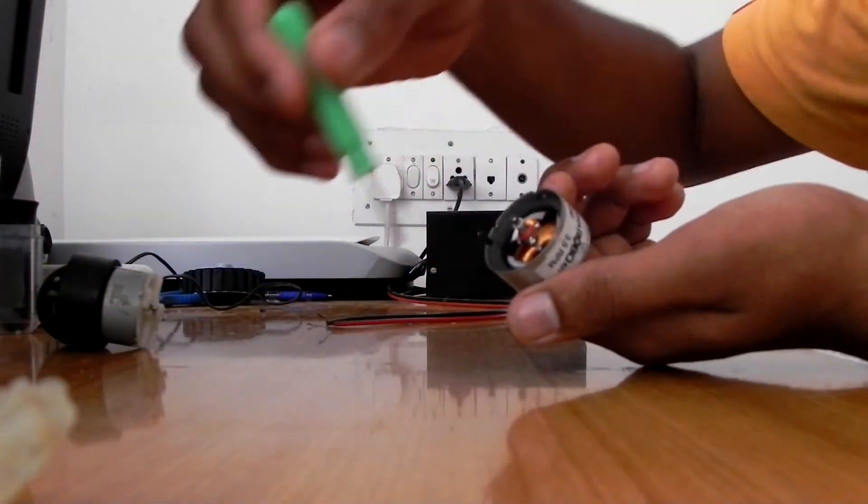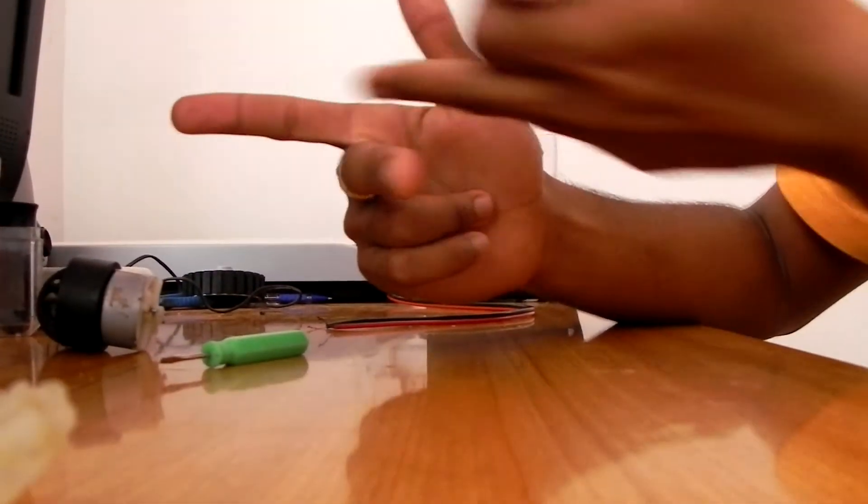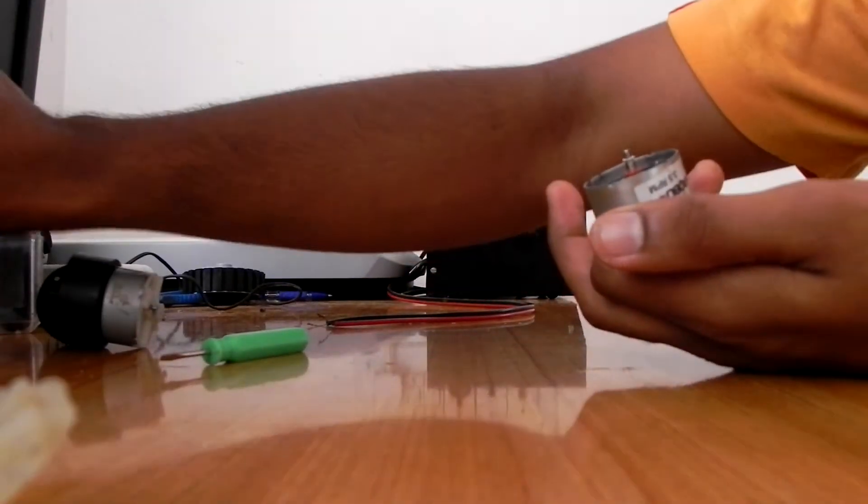And as the current moves only in one direction, by applying the right-hand rule for magnetic field, current, and force, the force always remains in the same direction.